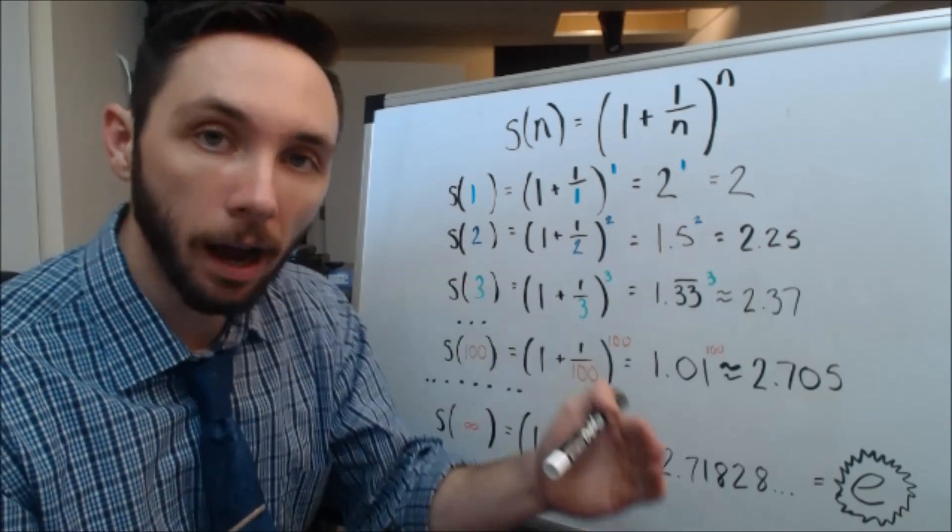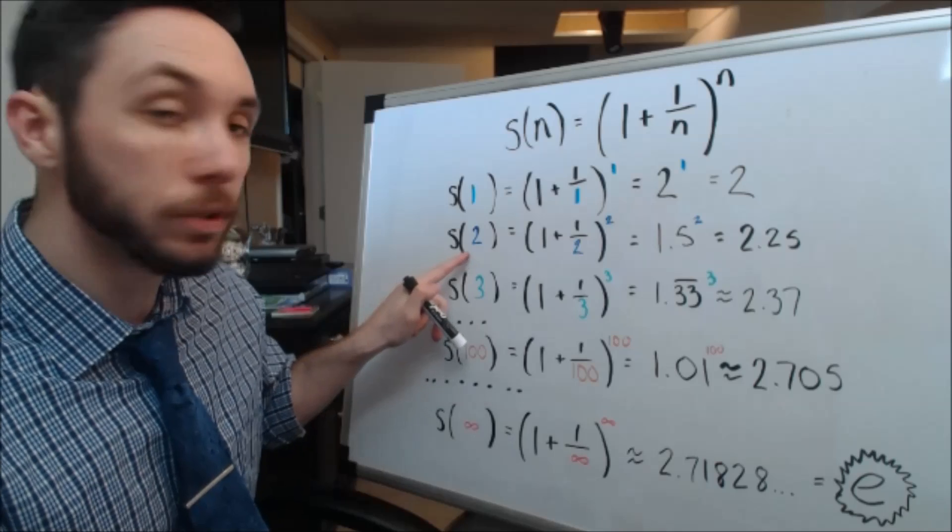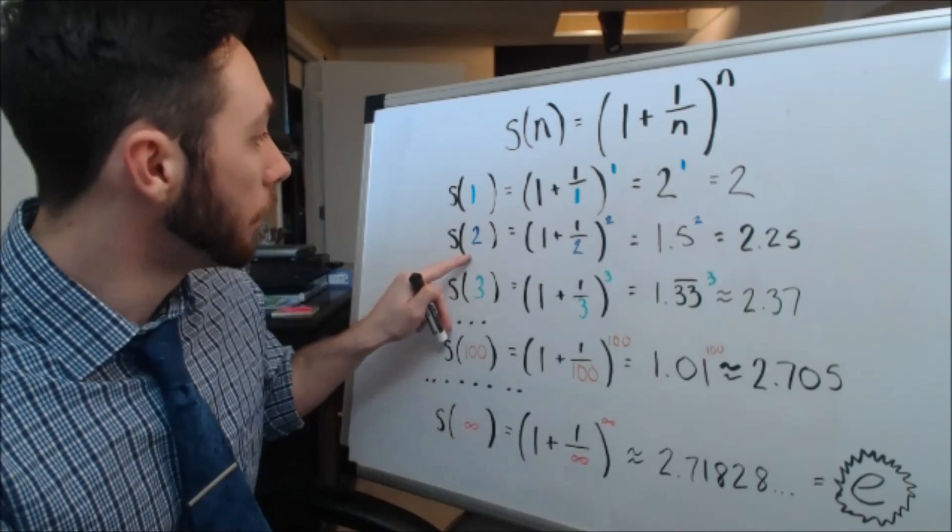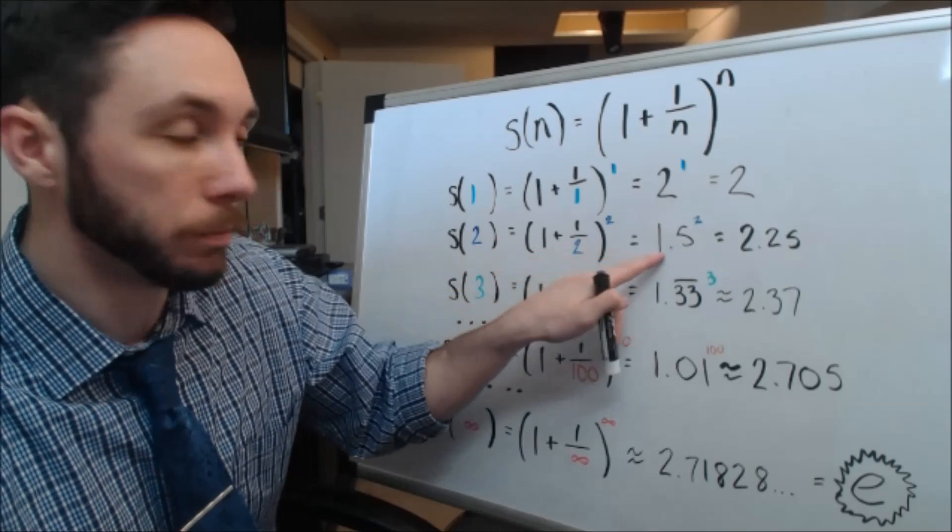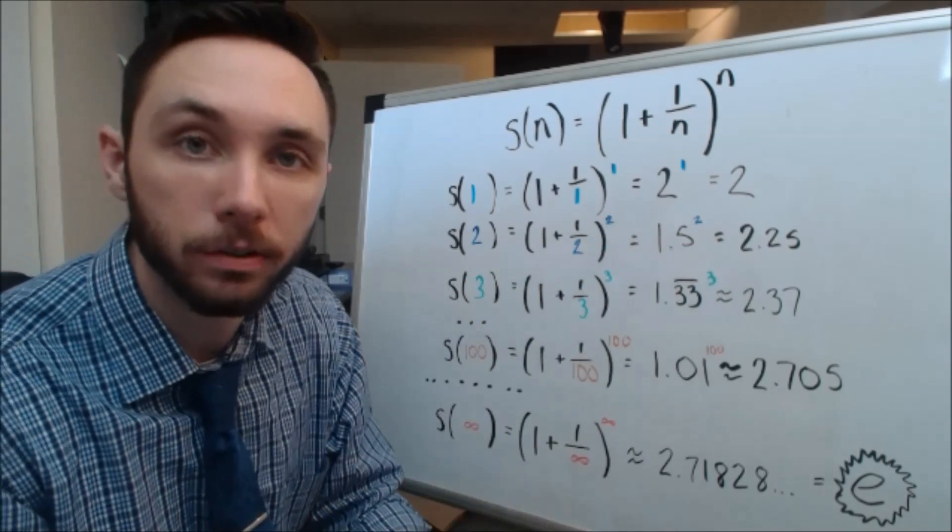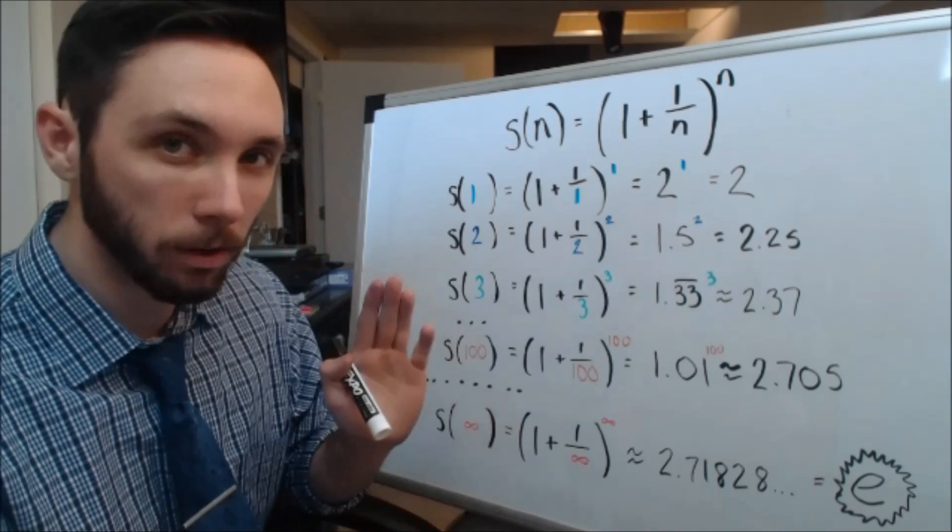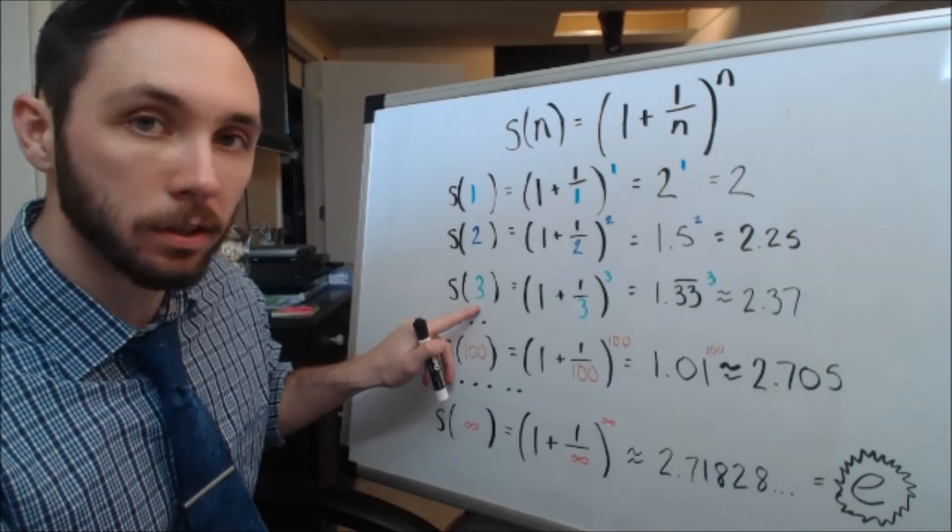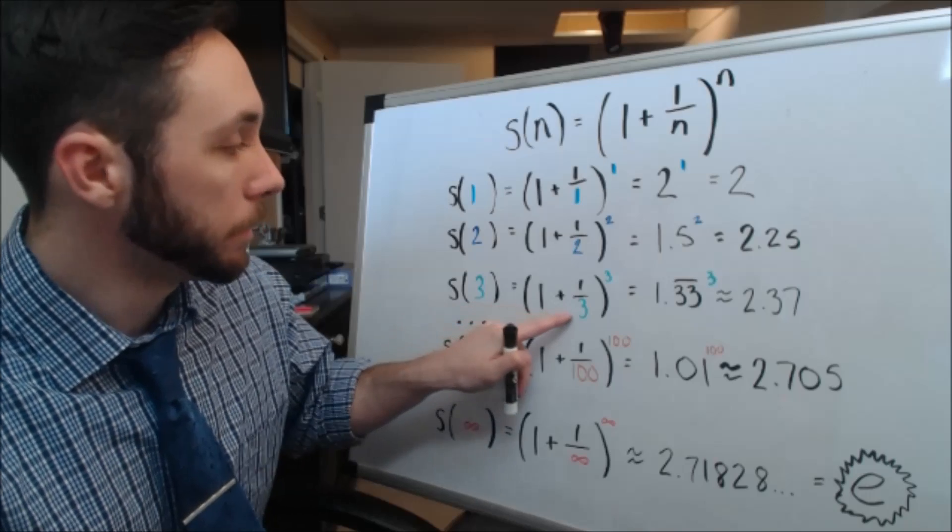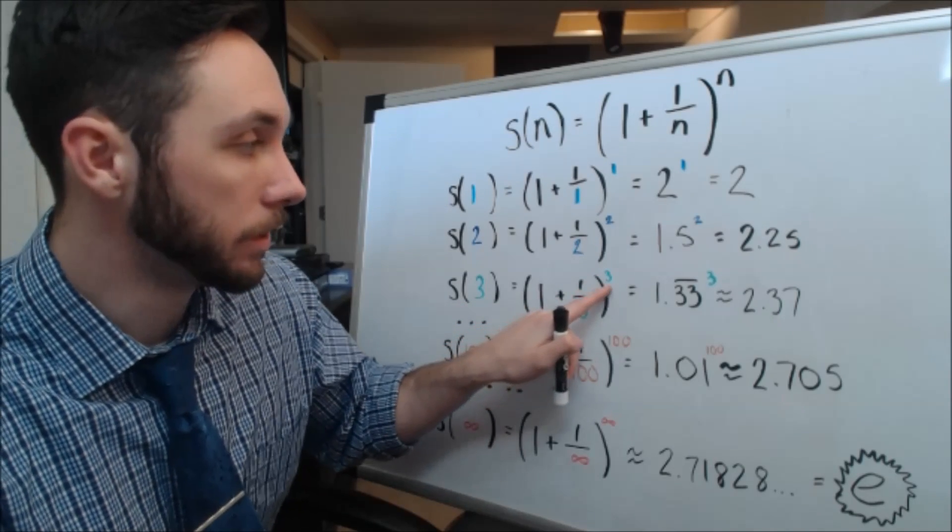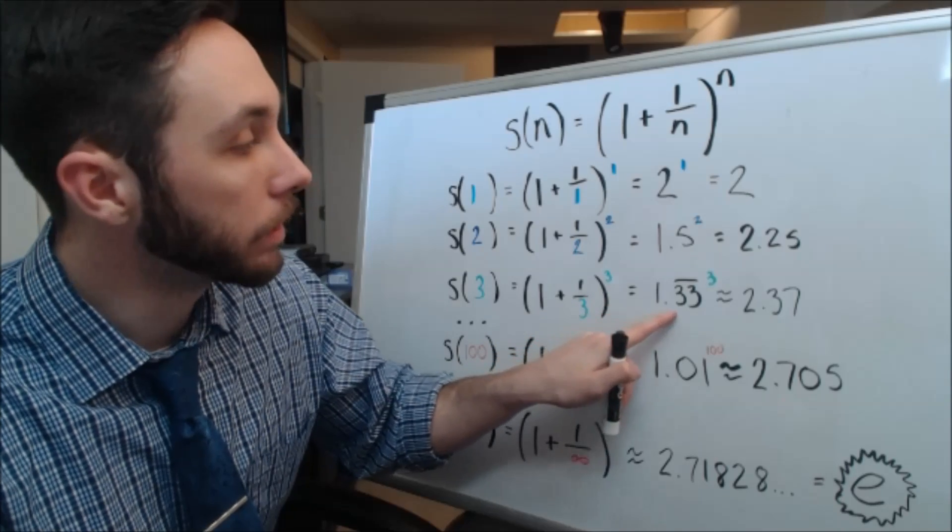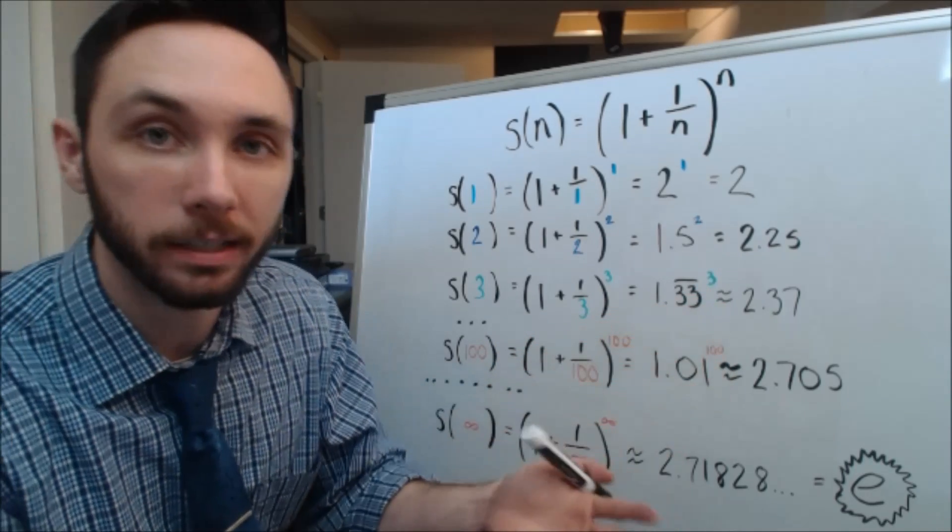I want to go a little bit higher than just that. I want to plug in 2. I want to find S of 2. When I plug in 2, that's 1 plus 1 half. So, 1.5 to the second power, and that's 2.25. Let's do that one last time. Let's go up to 3. S of 3. I'm going to plug in that 3 for those n's. 1 plus 1 third to the third power. I'm going to get 1.3 repeating to the third, and that's going to be approximately 2.37.